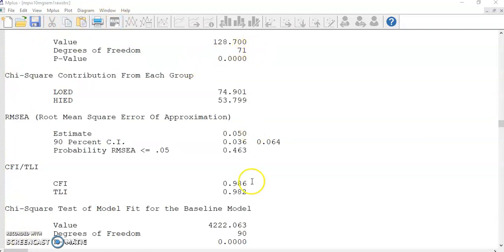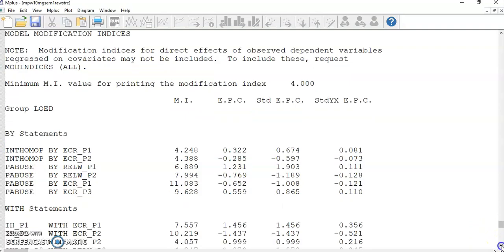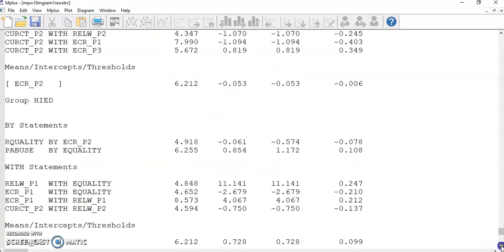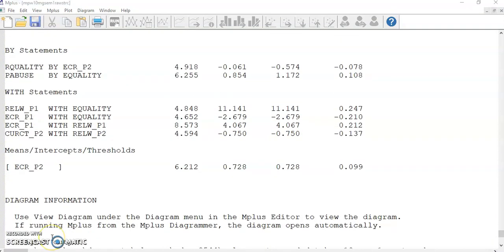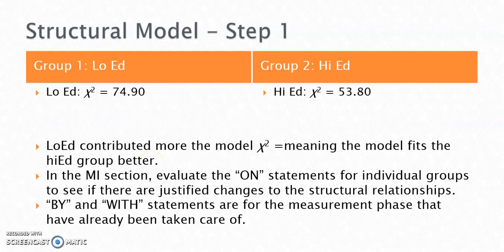The model fit indices in the output file remain good, and there are no modification indices for on statements. Here we ignore those by and with statements because they are for the measurement phase and have already been taken care of. So this means we completed step 1 for the structural phase. Both groups kept the hypothesized structural relations without making any changes.